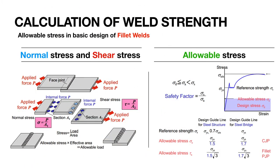When designing fillet welds, there are two stresses involved: normal stress and shear stress. Normal stress acts within the planes of the plates being joined, while shear stress occurs at the joint interface. Since stress equals load over area, and shear stress is load over shear area, the allowable load equals allowable stress times effective area.